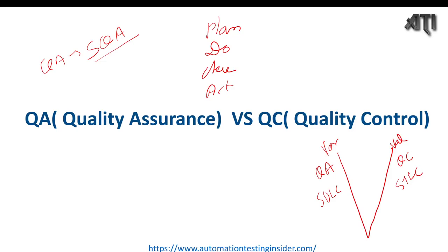There are four stages of quality assurance: Plan, Do, Check, and Act. Planning means defining process-related objectives and activities to ensure all processes are in place. Do means making changes to existing processes or developing new processes. Check means monitoring the process. Act means taking actions to improve the process.